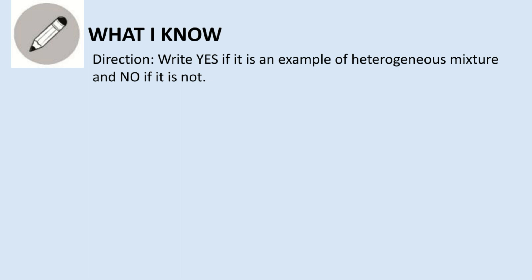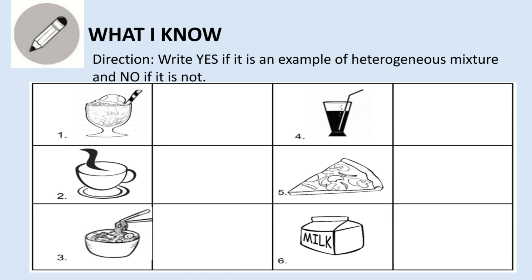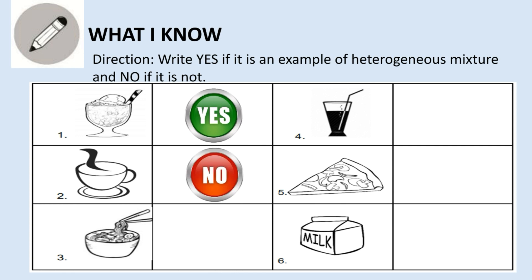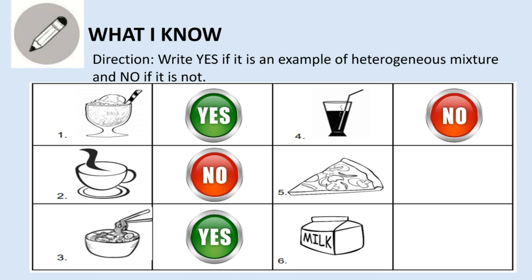What I Know. Direction: write yes if it is an example of a heterogeneous mixture, and no if it is not. Look at the pictures: one, halo-halo; two, hot coffee; three, noodles; four, juice; five, pizza; six, milk. I will give you 10 seconds to answer. You may now start.